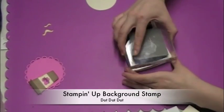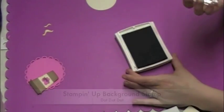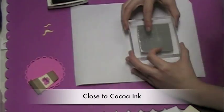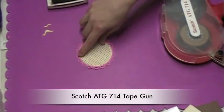So now that I have that I'm using this Stampin' Up! background stamp called dot dot dot. And I'm just back to my Close to Coco ink again. I'm just going to stamp that right under this circle. Very cute.